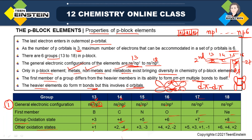Negative oxidation states are also possible when elements gain electrons. For group 14, gaining four electrons gives -4. For group 15 with ns²np³, removing all three p electrons gives +3, but gaining three more electrons gives -3, because np⁶ is the stable noble gas configuration.